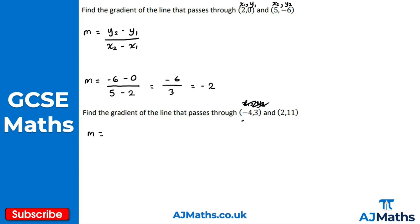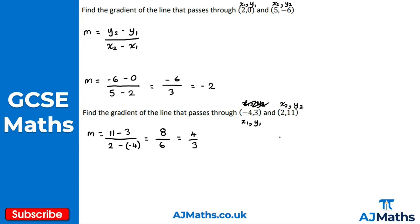So x1, y1 and x2, y2. m is equal to y2 minus y1: 11 minus 3, all over x2 minus x1: 2 minus minus 4. 11 minus 3 is 8 for the numerator. For the denominator, 2 minus minus 4 is the same as 2 plus 4, giving 6. So 8 over 6, which cancels down to 4 over 3. The gradient of the line through these two points is 4 over 3, and that brings us to the end of this video.